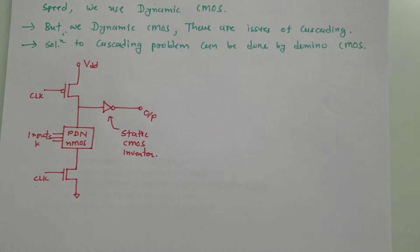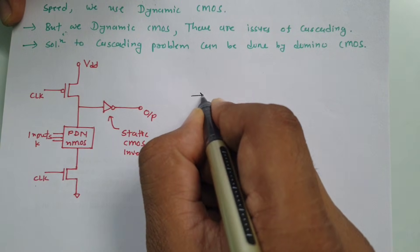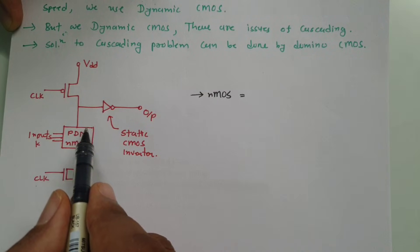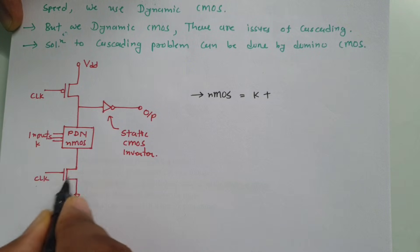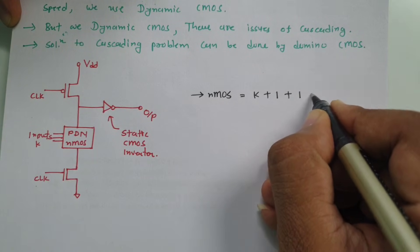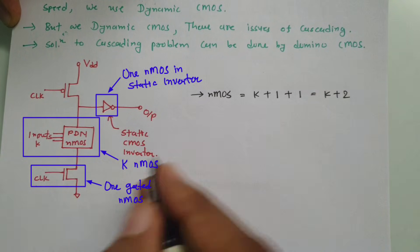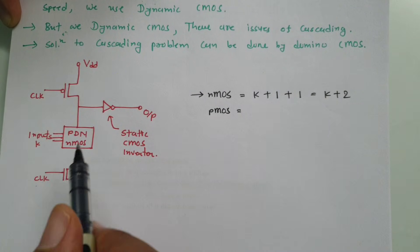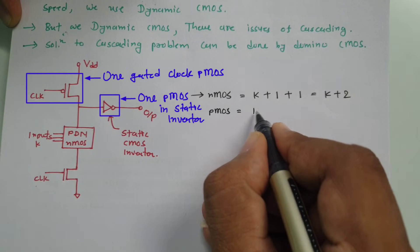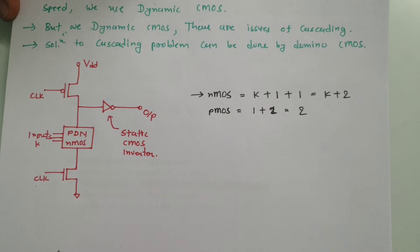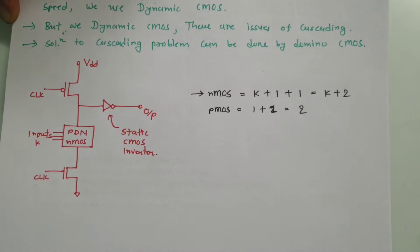Now, if we calculate the total number of transistors, the total number of NMOS in Domino Logic CMOS is K inputs giving K NMOS, plus the gated NMOS, plus 1 NMOS in the inverter — so total K+2 NMOS. For PMOS, there is 1 PMOS for the gated clock and 1 PMOS in the static CMOS inverter, giving a total of 2 PMOS. The basic advantage of Domino Logic CMOS is to avoid cascading issues.